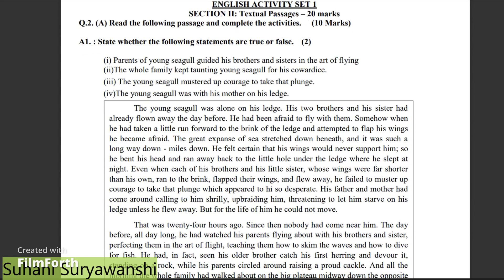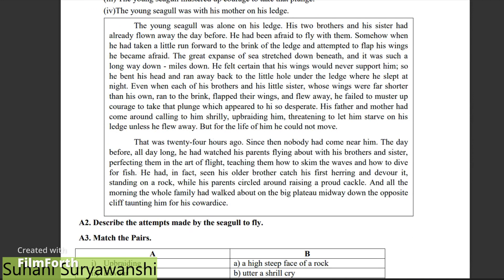Let us start with question number 2A. Question 2A and question 2B follow the same pattern because in the textbook you will have a paragraph. The tips are the same. We have A1, A2, A3, A4, and A5 — these questions follow the same pattern. If you have one paragraph in your textbook, you will be able to complete it safely.